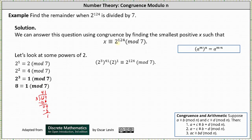And now from here, because we know 2 cubed is congruent to 1 mod 7, we can replace 2 cubed with 1.